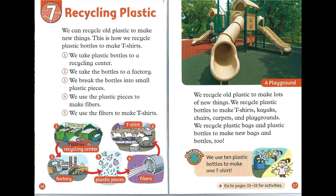Chapter 7: Recycling Plastic. We can recycle old plastic to make new things. This is how we recycle plastic bottles to make T-shirts. Step 1: We take plastic bottles to a recycling center. Step 2: We take the bottles to a factory. Step 3: We break the bottles into small plastic pieces. Step 4: We use the plastic pieces to make fibres. Step 5: We use the fibres to make T-shirts.